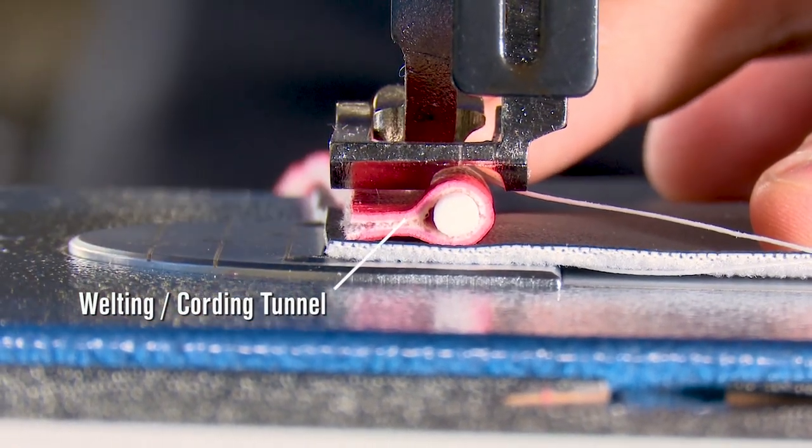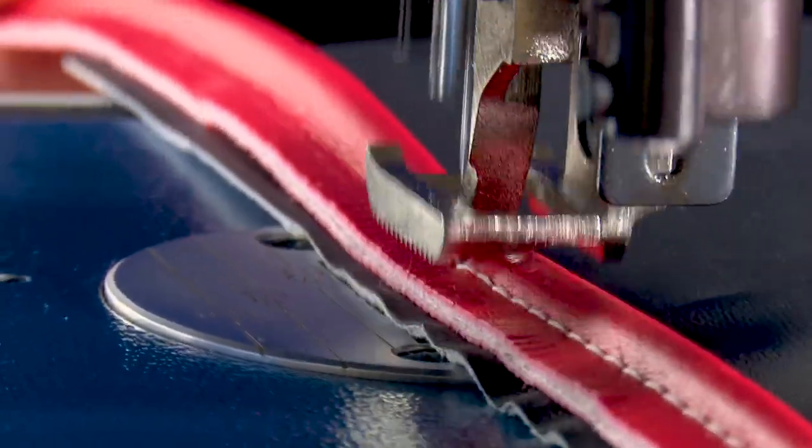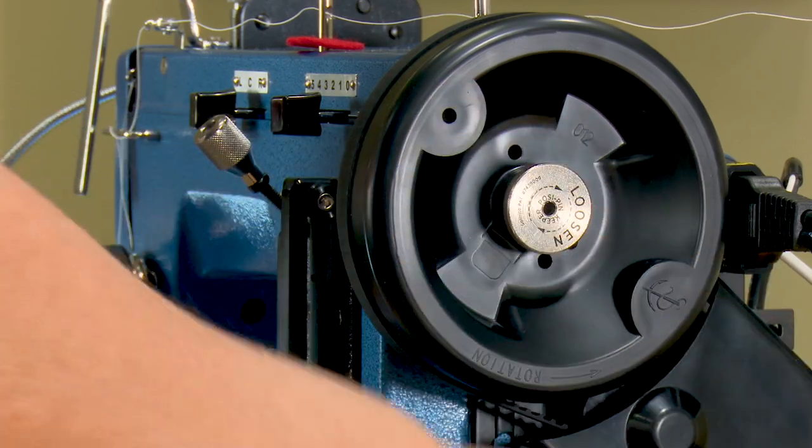Sailrite's Ultrafeed sewing machines all include a welting or cording tunnel in the standard foot, so you can sew standard piping without replacing the presser foot.